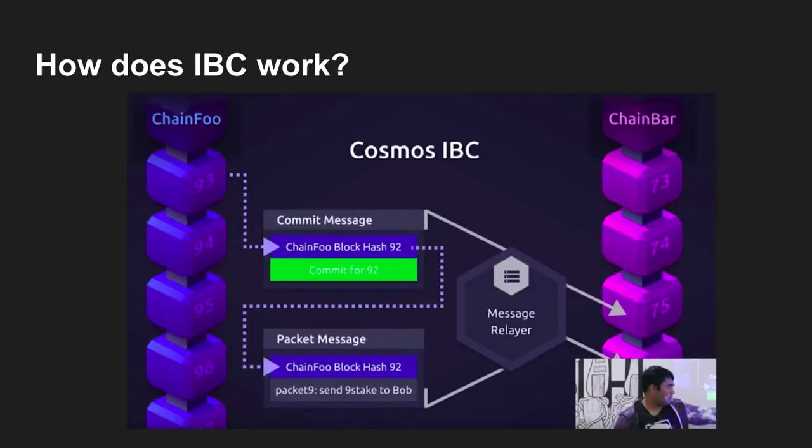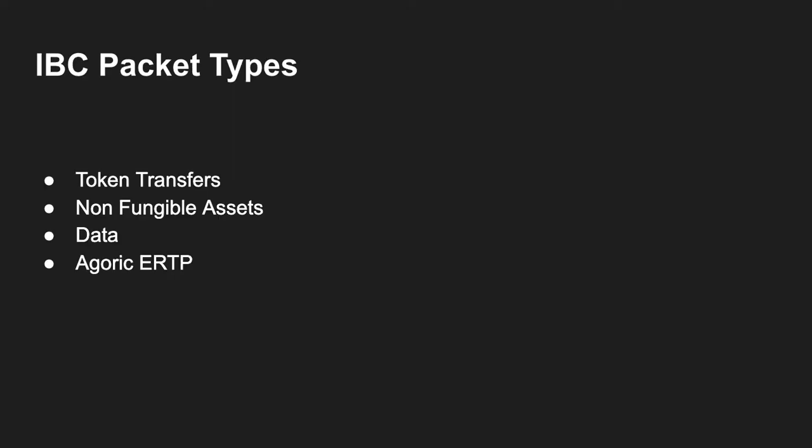So how does IBC work? In this slide from Sunny's presentation, you can see ChainFoo commits a message, which also includes a packet message — for this example, send 9 stake to Bob. This packet message gets sent to a relayer and is included in ChainBar. Some of those IBC packet types include token transfers, non-fungible assets, and data.